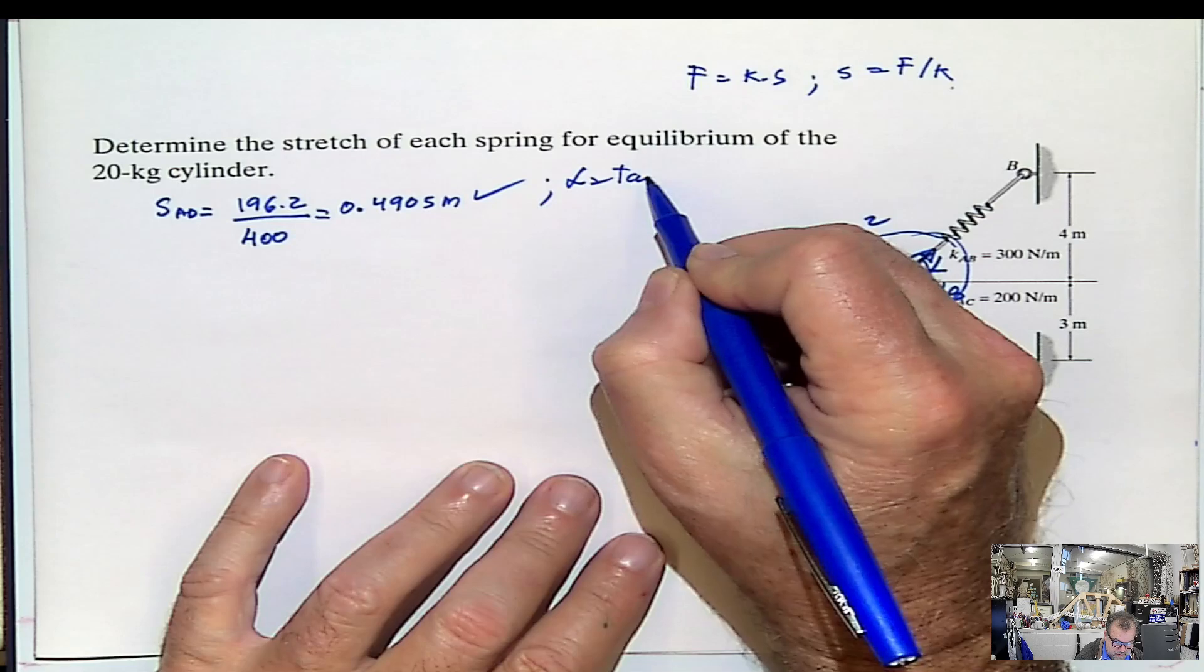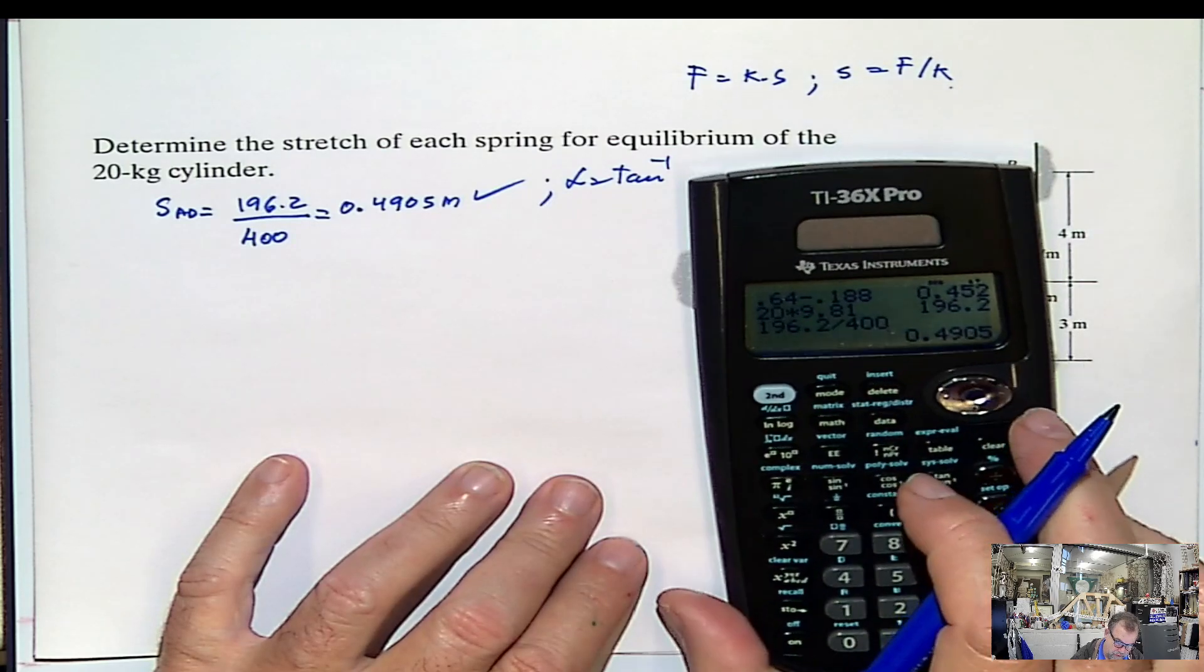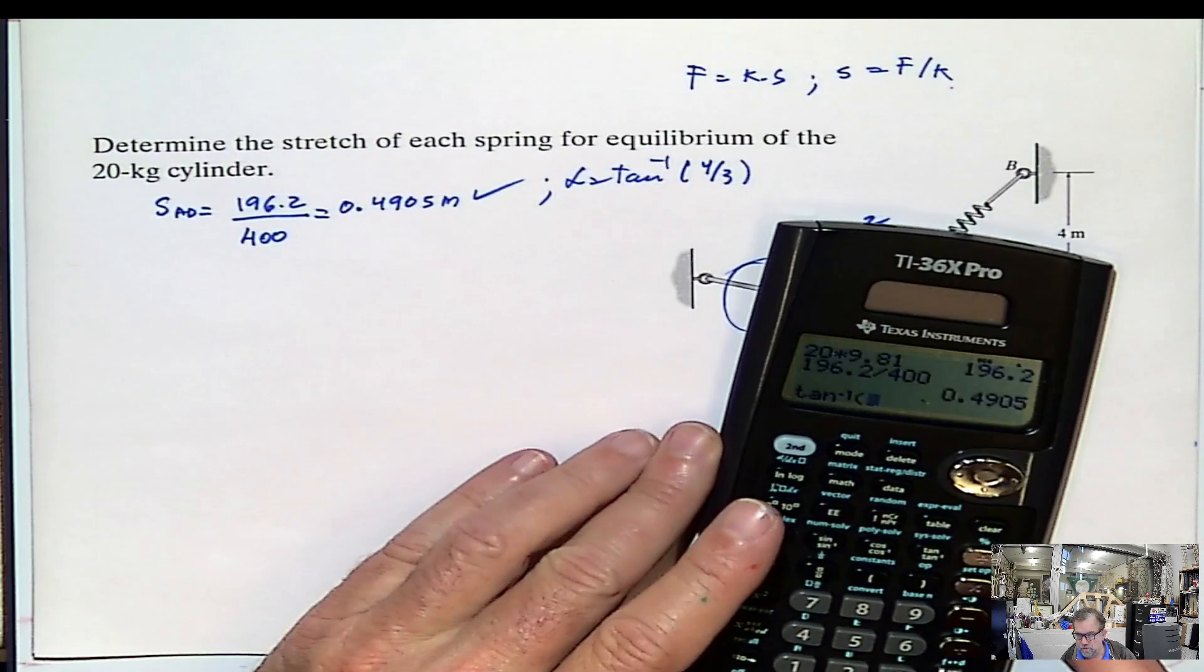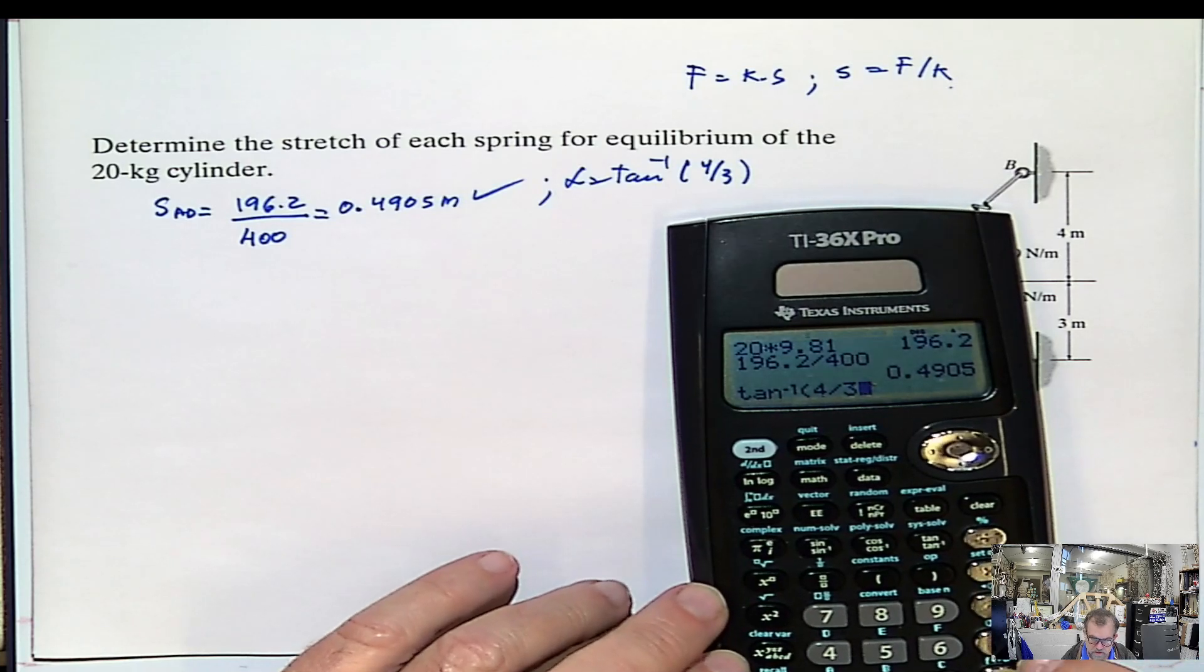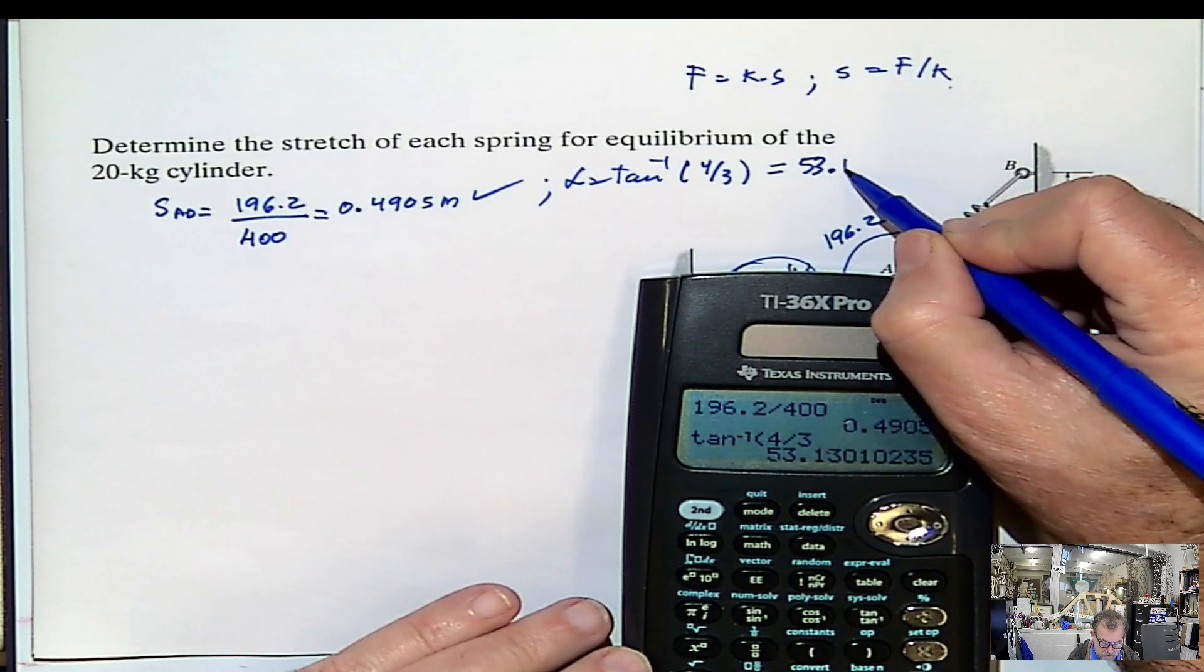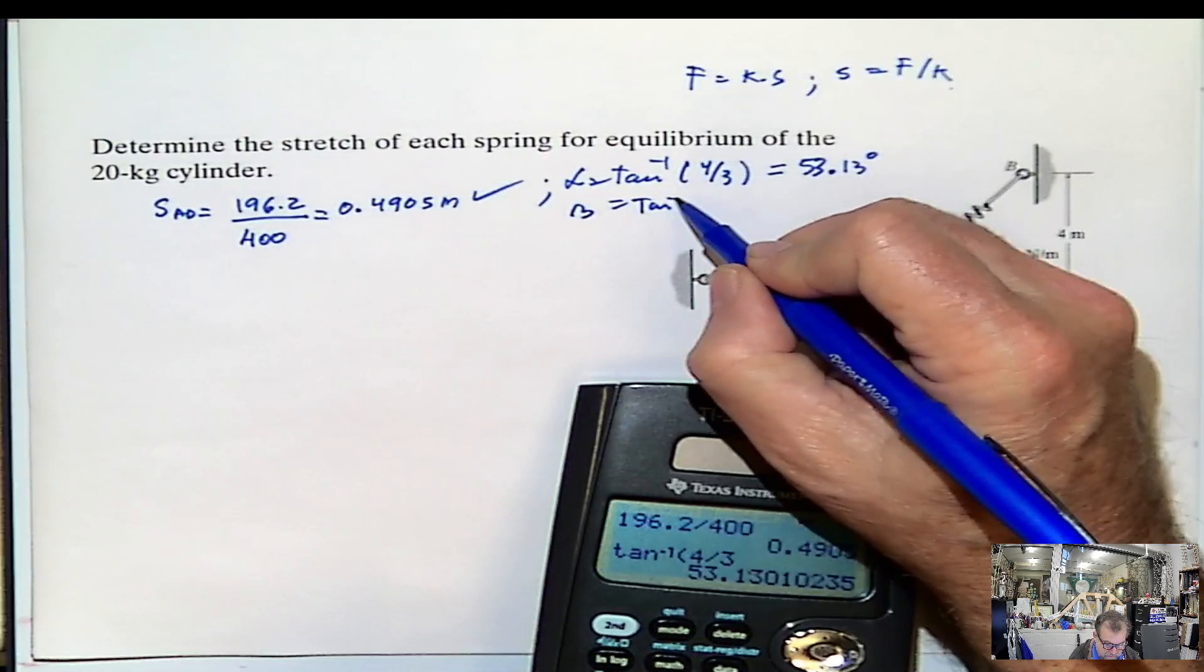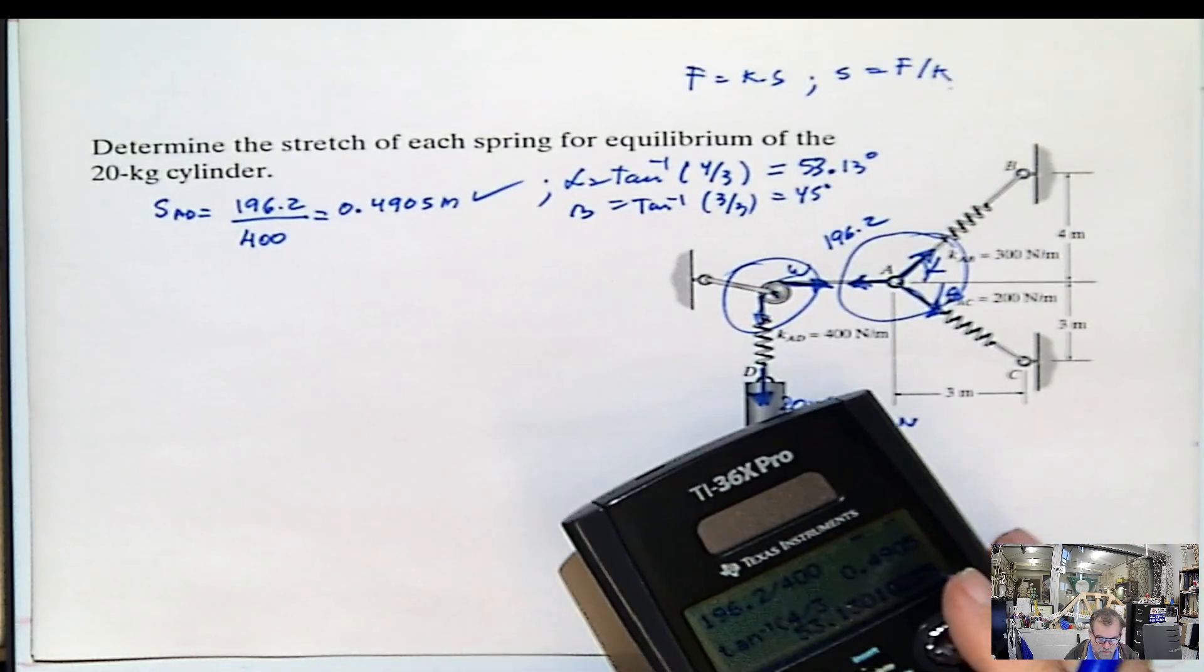Alpha, it will be inverse tangent of 4 divided by 3. Inverse tangent, I'm trying to hit the sweet spot here, 4 divided by 3. So you can see the calculator, 53.13 degrees. And beta, this one will be inverse tangent of 3 divided by 3, meaning 45 degrees. Now we know the angles.